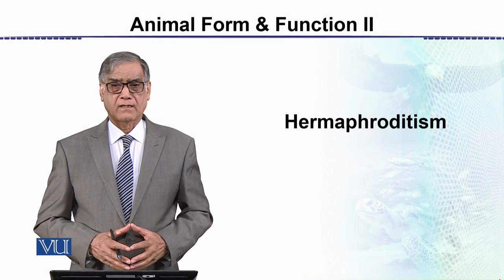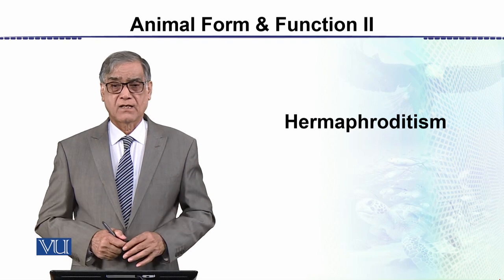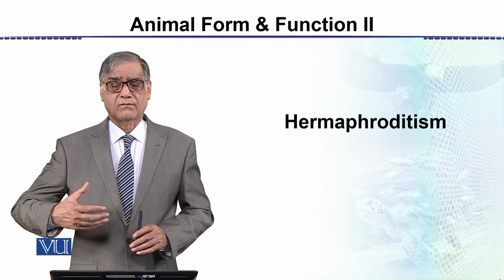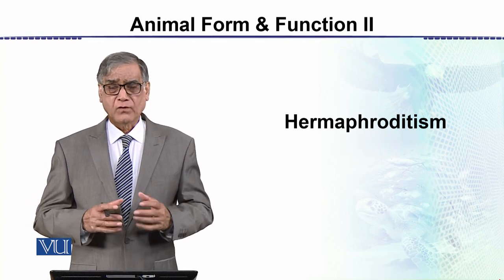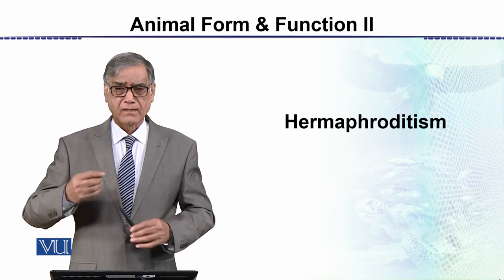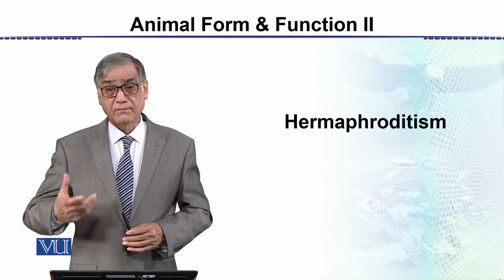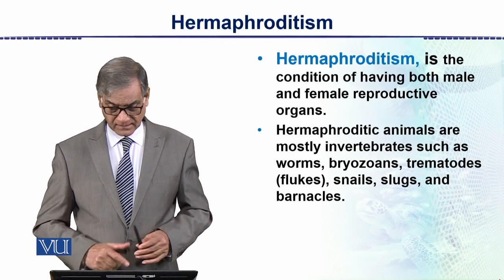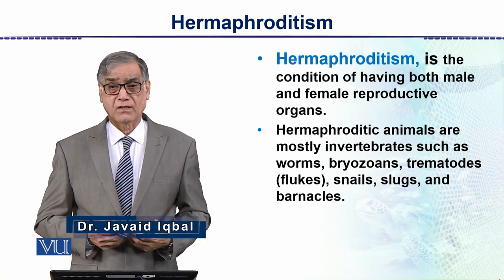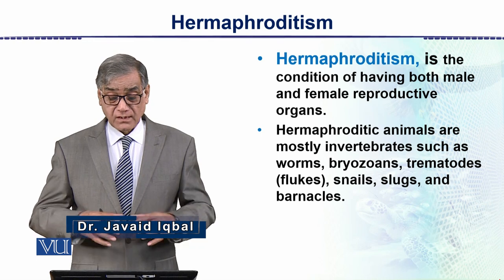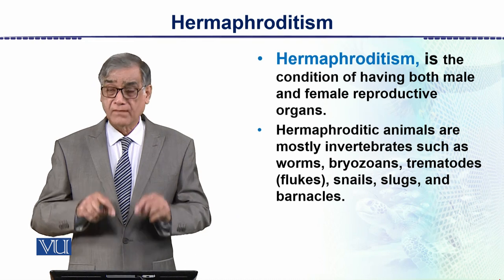This topic is hermaphroditism. We need to understand what hermaphrodite animals are. These are animals which have both sexes within a single individual — a single animal has the ability to produce sperms as well as eggs. This condition is called hermaphroditism: it is a condition of having both male and female reproductive organs in the same individual.